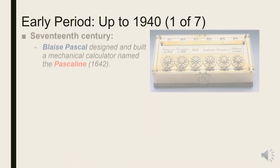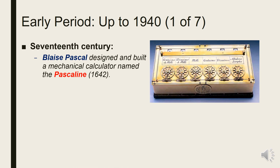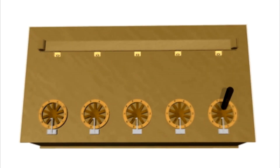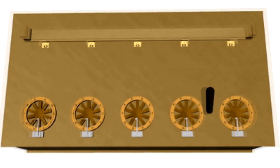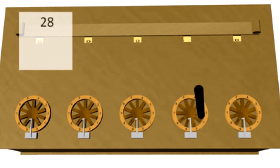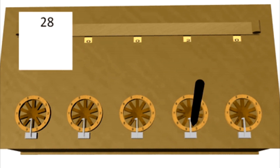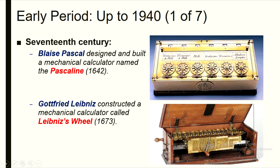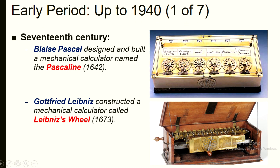In 1642, Blaise Pascal designed and built a mechanical calculator named the Pascaline. The Pascaline is a direct adding machine — it has no crank, so the value of a number is added to the accumulator as it is being dialed in.